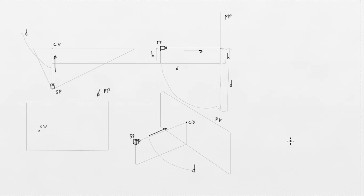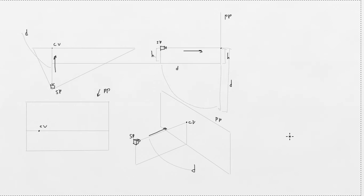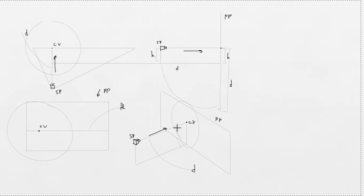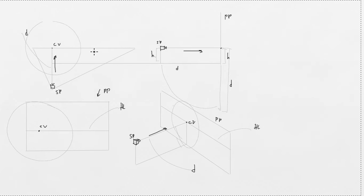Next is the cone of vision, or field of view, or angle of view — the extent of the observable world seen by the eye or a camera, measured in degrees. It's considered that 50 to 60 degrees is the most natural looking. We can see it here and here. Next is the horizon line. In one and two-point perspective, it usually represents the eye level of the observer and the line between sky and ground or sea. This one is the horizon line — we can see it here, and horizon line here.